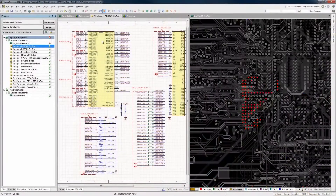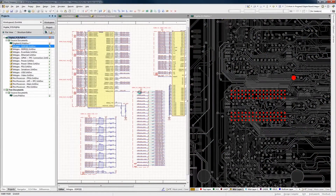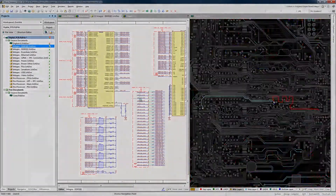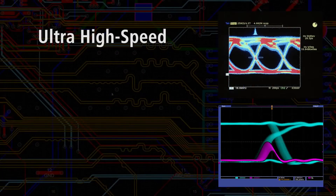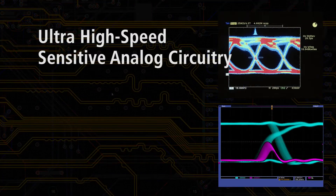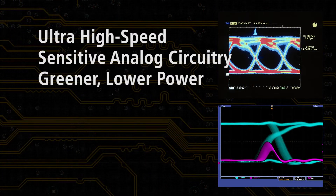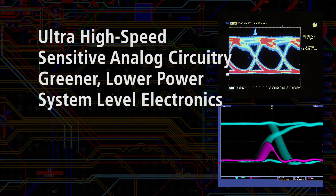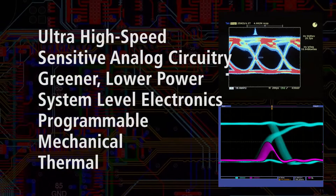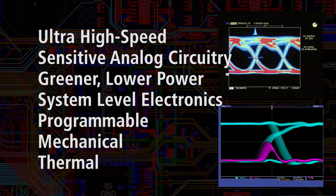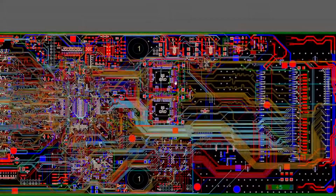Today's PCB and electronics design engineers have an increasingly challenging role in every product design. With designs that require ultra-high speed signal edge rates, sensitive analog circuitry, greener low power requirements, and a multiplicity of design domains, it's really hard to keep all the design plates spinning. It's even harder having to do all of that and meet design time and production cost goals.